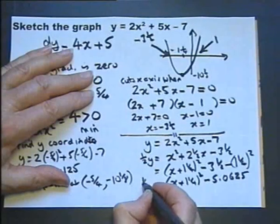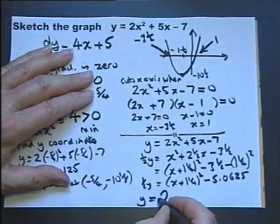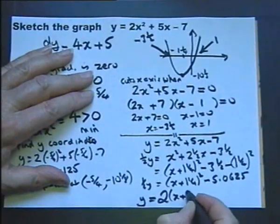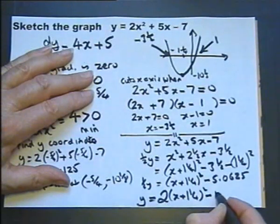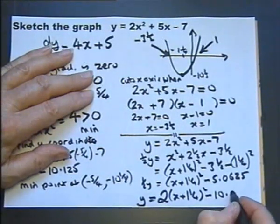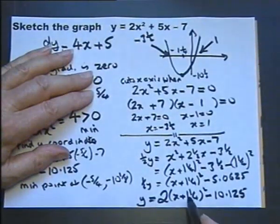this will come to minus 5.0625. But that is a half y, so I need to double both sides. So I put a double there. And I double this. And if you double that, you'll get 10 and a quarter. Sorry, 10 and an eighth.